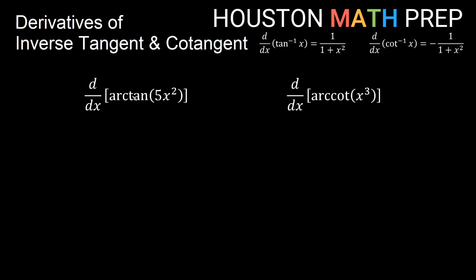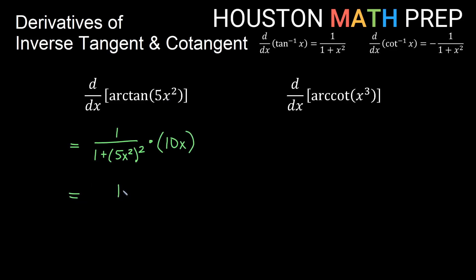Note that inverse tangent and inverse cotangent can also be written as arctangent and arccotangent. For the derivative of arctangent of 5x squared, we use the inverse tangent definition: 1 over 1 plus 5x squared, all squared. Then the chain rule gives times the derivative of the inside, which is a power rule — the 2 comes out front and multiplies the 5 already there, and the power goes down by 1, giving just x. Rewriting, we get 10x on top and 1 plus 25x to the 4 on the bottom.